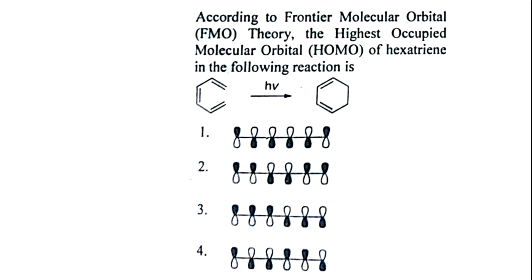Here they are asking the HOMO and LUMO. Here in hexatriene we can see three double bonds are there, which is reduced to two. And here three double bonds, that is six pi electrons, are there. And they will be forming six molecular orbitals, out of which three are bonding molecular orbitals and three are antibonding molecular orbitals.